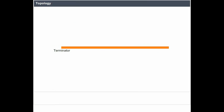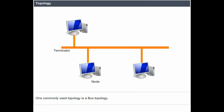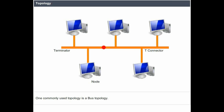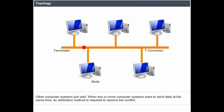One commonly used topology is bus topology. In a bus — a linear cable network — only one computer system is allowed to transmit at any instant; other computer systems just wait. When two or more computer systems want to send data at the same time, an arbitration method is required to resolve the conflict.